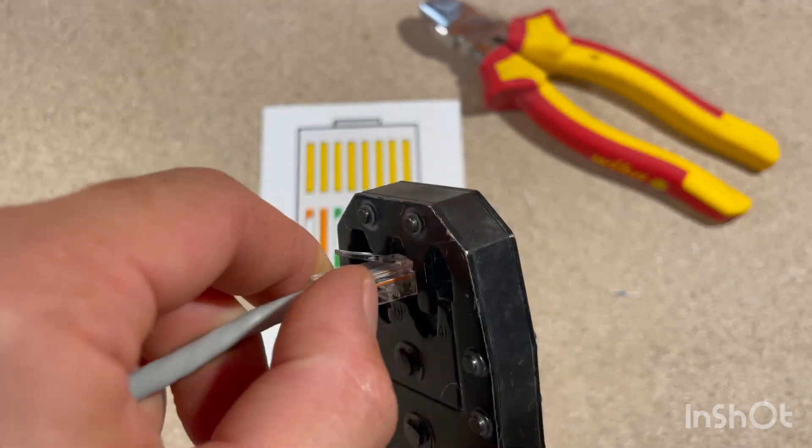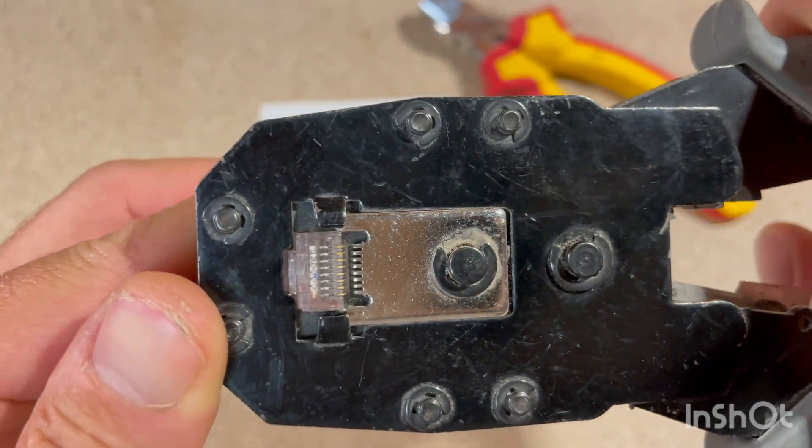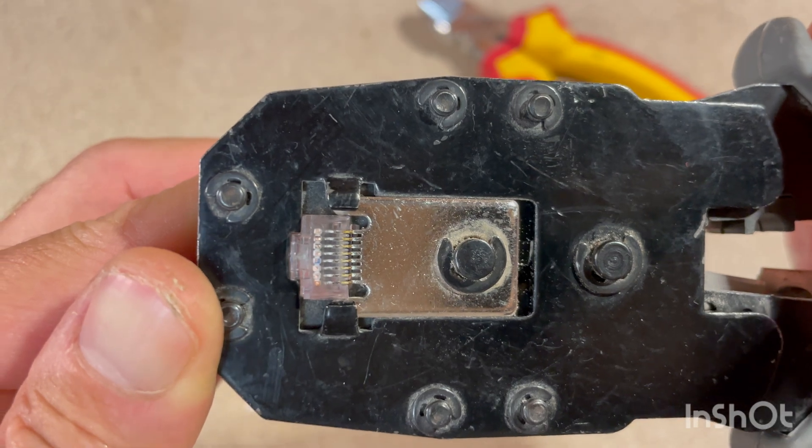Insert the RJ45 with cable into the crimping tool. Squeeze the tool firmly to push the pins into the wires and secure the cable.